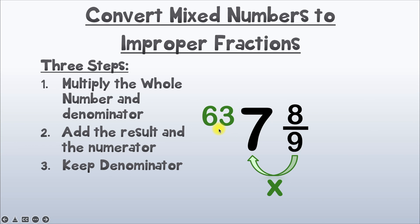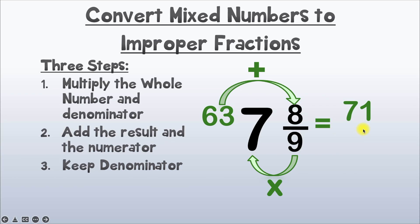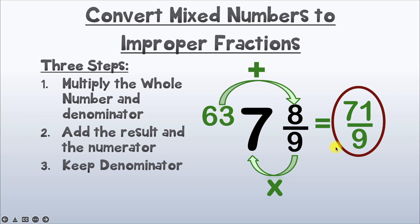Now step 2: add the result — 63 — and the numerator. So we've got 63 plus 8, and when we add those we get 71. Then step 3: keep our denominator. Our denominator was 9, so it stays 9. Our final answer is 71 over 9 — the improper fraction for 7 and 8 over 9 is 71 over 9.